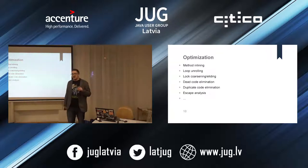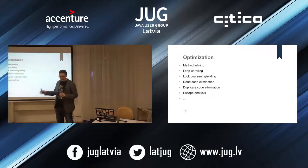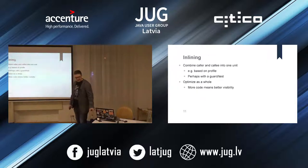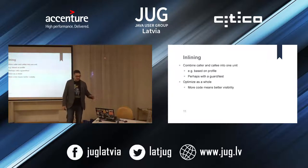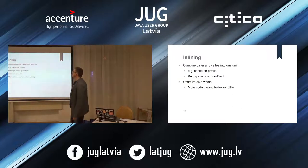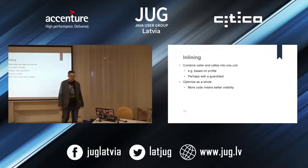Don't expect huge wins from splitting methods, but it does help. Let's quickly go through the different things JIT can do. One of the most common and impactful optimizations - along with compilation from bytecode to native code - is inlining. It's a way to collapse code from several methods into one, or remove some unnecessary method calls.